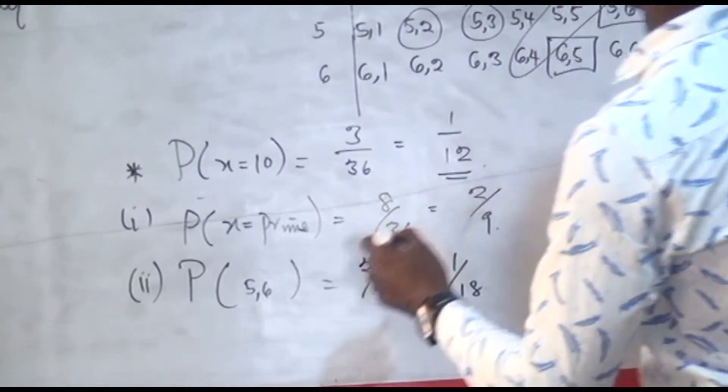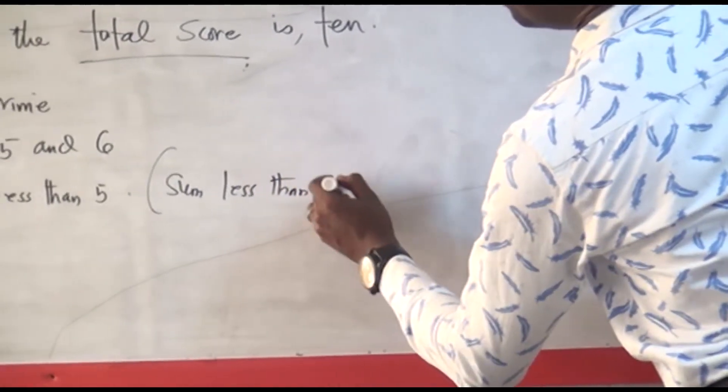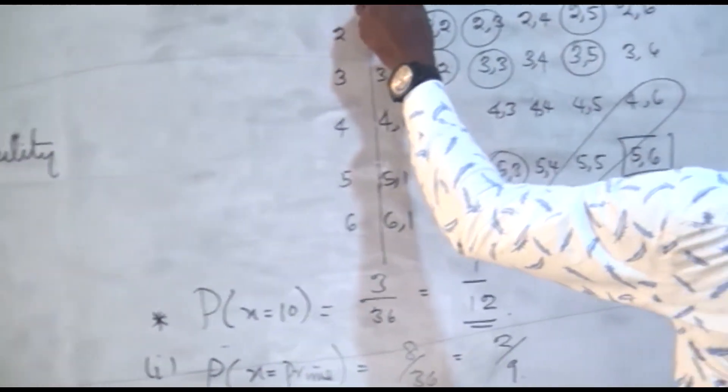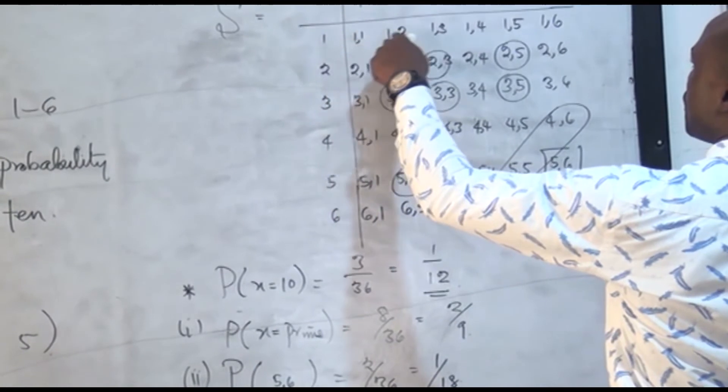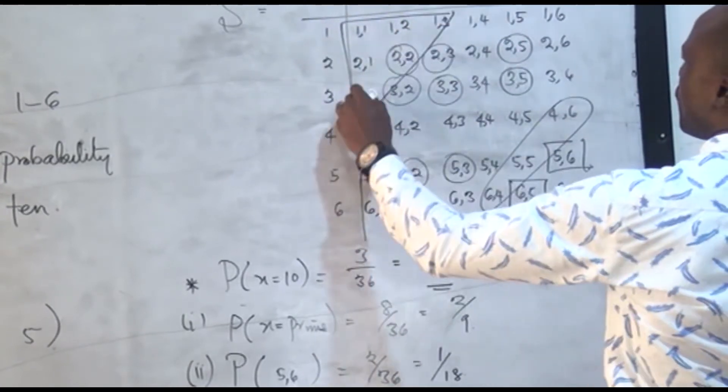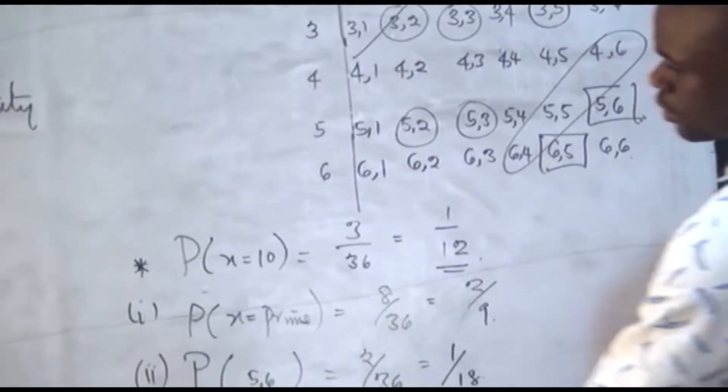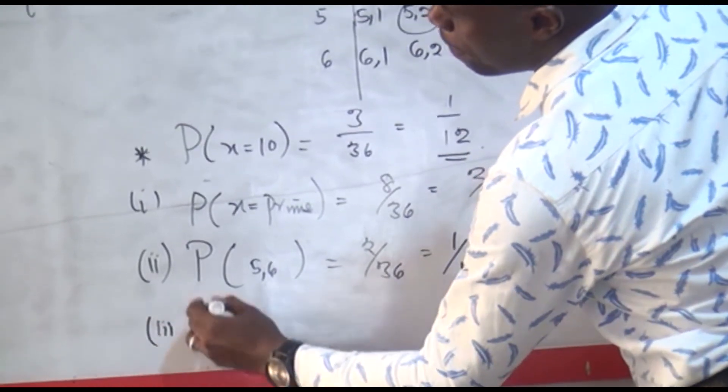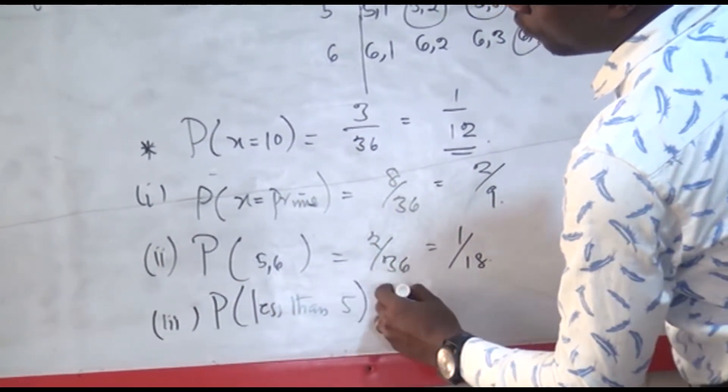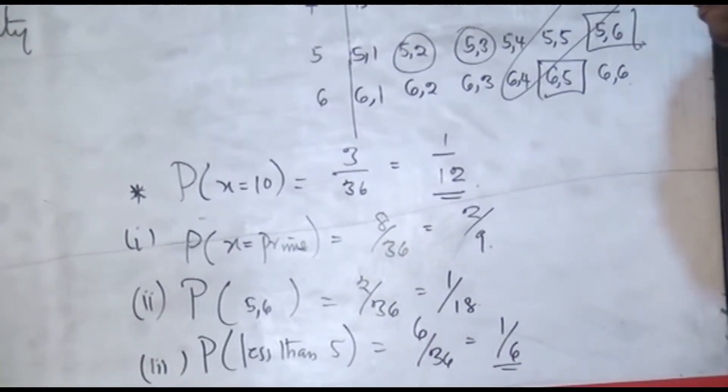And finally, picking numbers with sum less than 5. So you have this is going to give us 2. This is where you start having 5, so we're talking about all this upper triangle here: 1, 2, 3, 4, 5, 6. So probability of having less than 5 will be 6 over 36, and that is 1 over 6, and that is the answer for that.